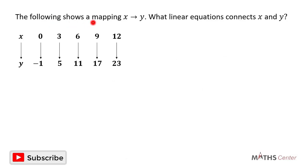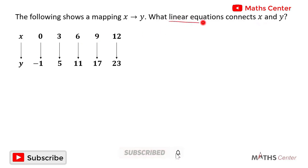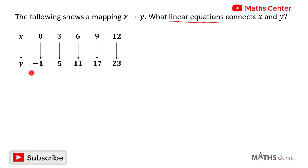The following shows a mapping of x to y. What linear equation connects x and y? The question tells us this is a linear mapping. We can also verify this because the differences between the x values are all the same, and the differences between the y values are also all the same. Since it is a linear mapping, the rule is given by y is equal to ax plus b, where a and b are constants.